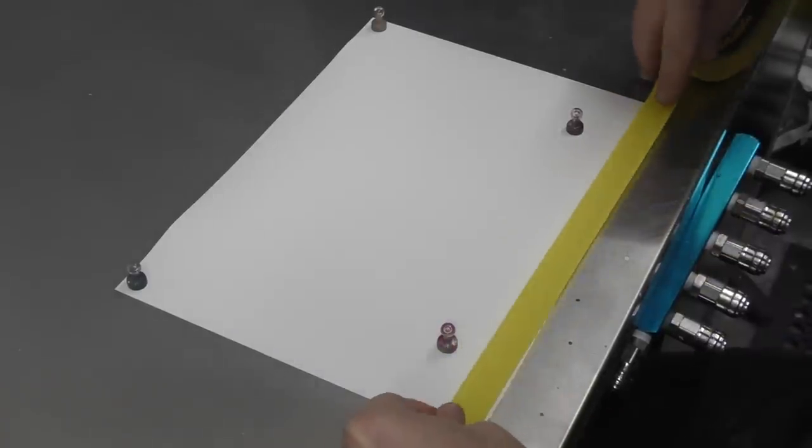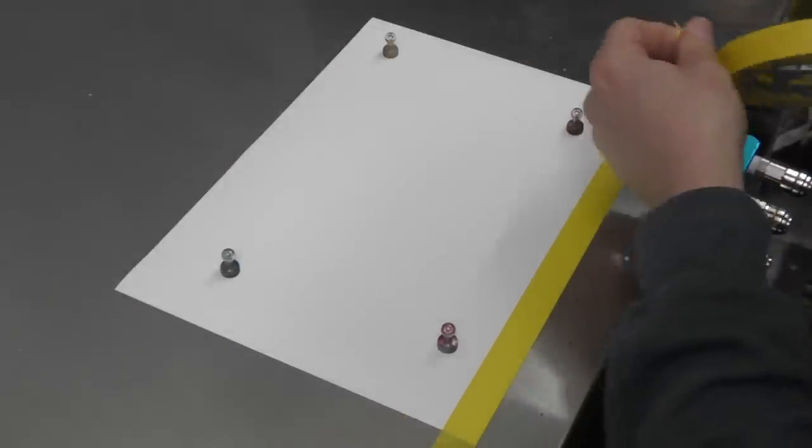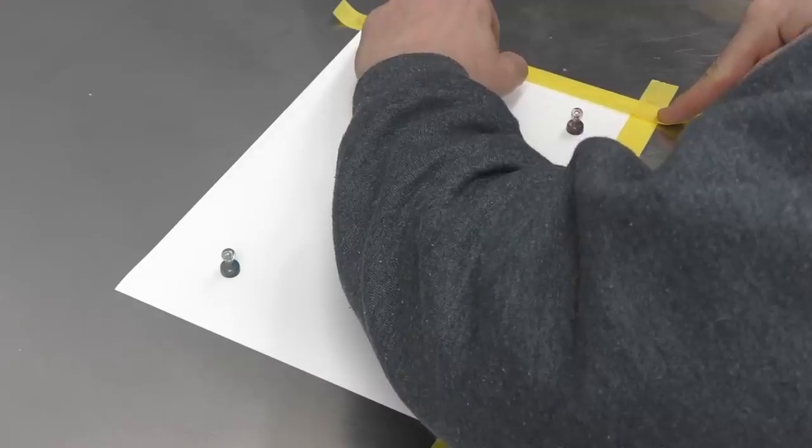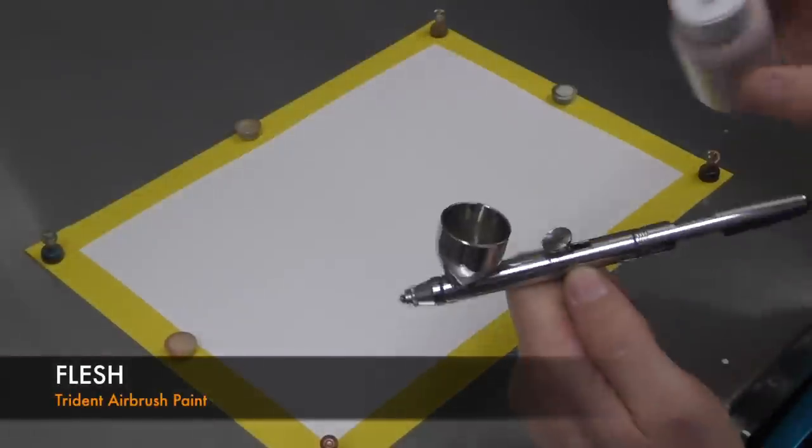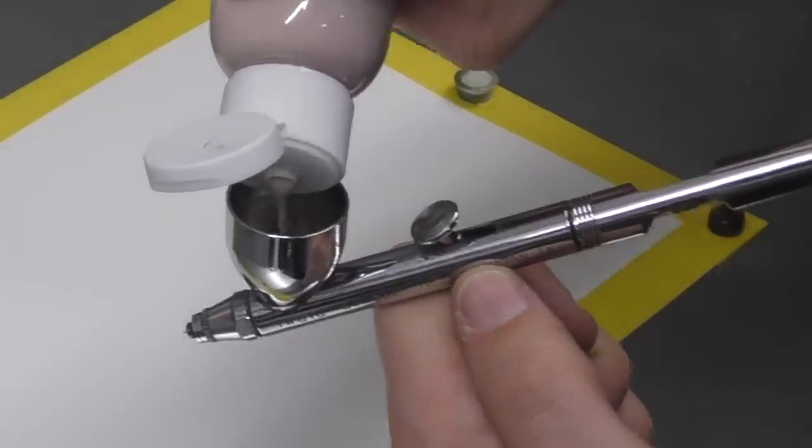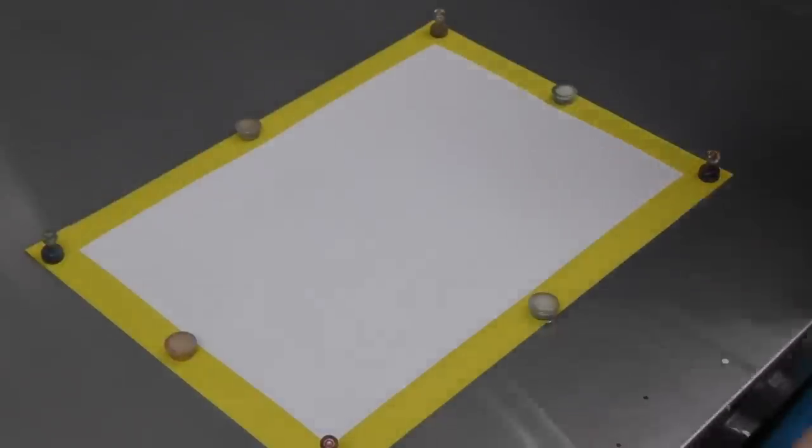Okay so I'm using a synthetic paper for this artwork just masking it up using those magnets just to hold it into place that way I'll have a nice clean border. Okay so the first thing I want to do is use some Fleshtone. I'm going to put that into my Iwata Eclipse. I'm just going to spray a base color over the entire surface of the synthetic paper.